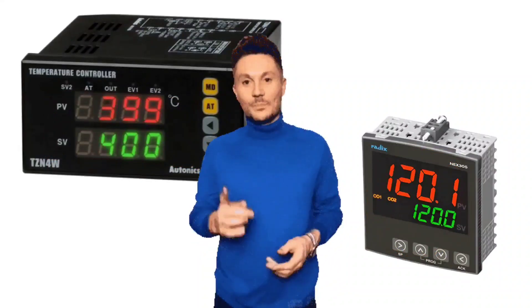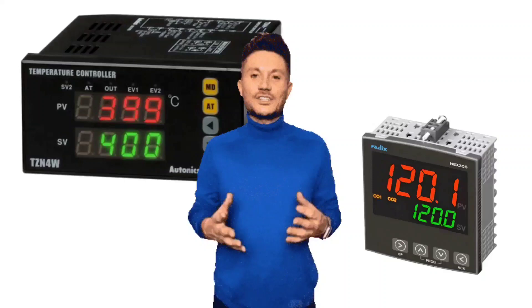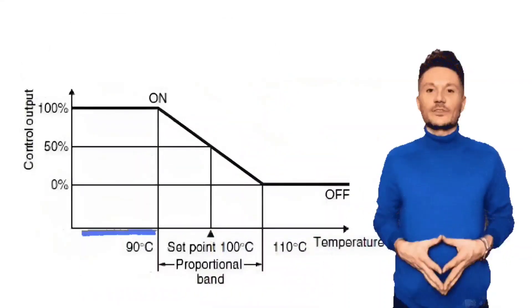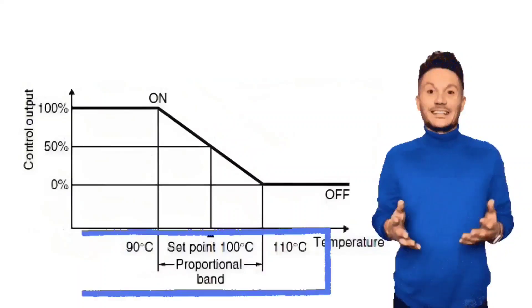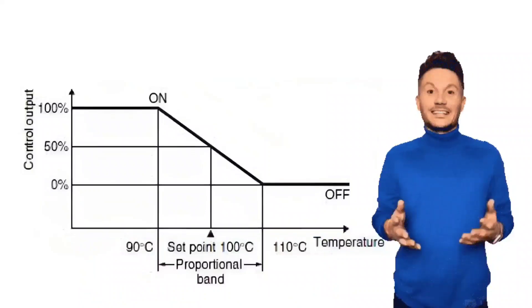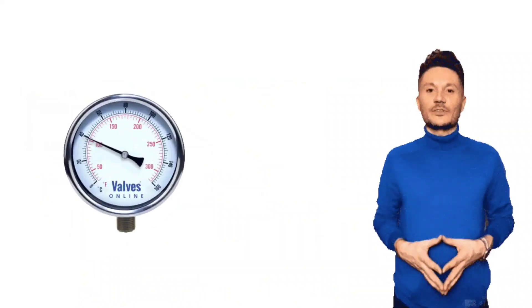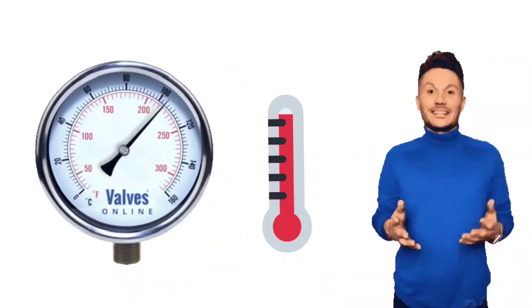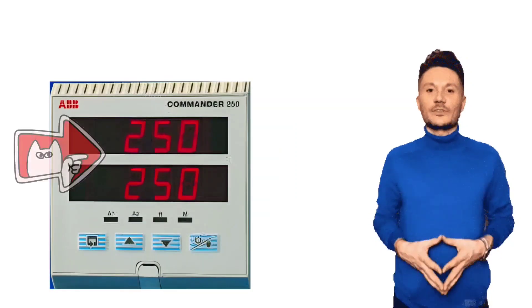Let us understand that first. Friends, the range or band of that process variable is called proportional band, PB. For example, suppose you have to control a temperature and its set point is 250 degrees Celsius.